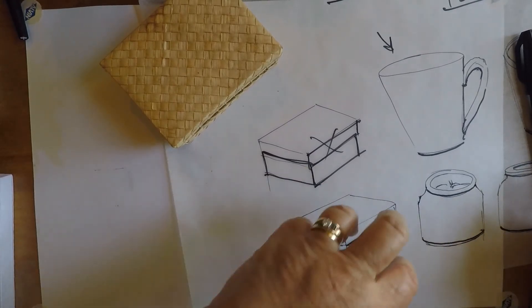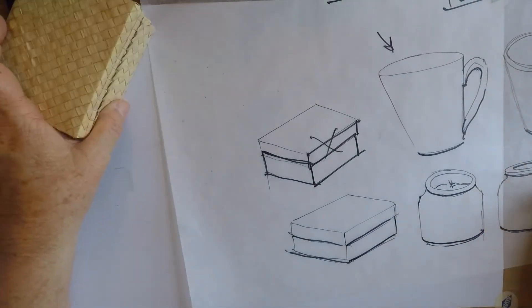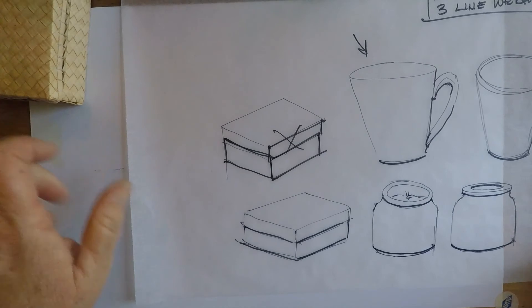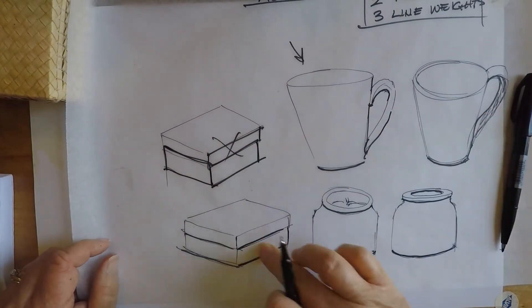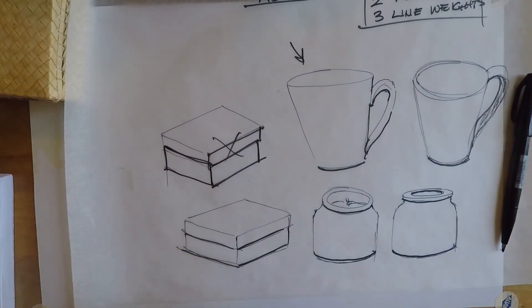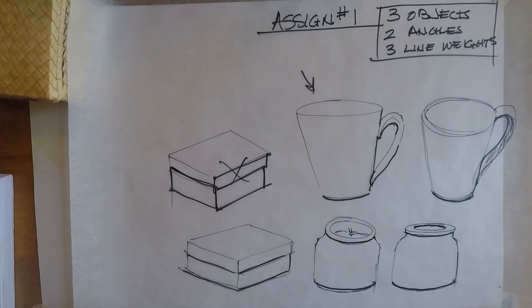All right? So you're going to have, I'd have one more view here, right? So your total would be your three objects with your three line weights from two different angles. And that's all you have to do for assignment one.